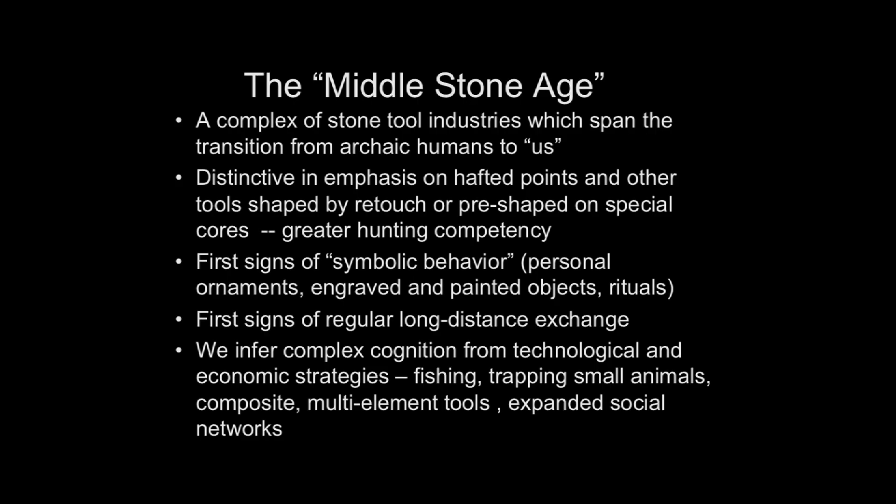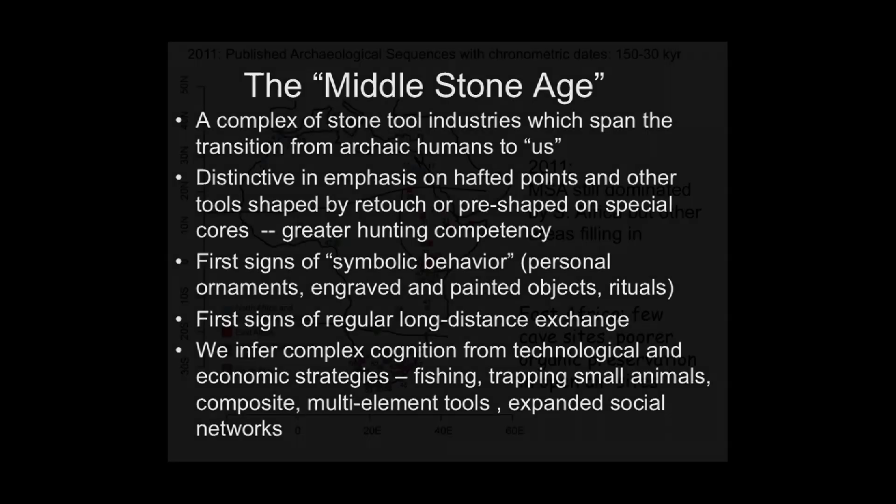This goes along with greater hunting competency. We also see in the Middle Stone Age — not necessarily from the very beginning, but certainly as it continues — the first signs of symbolic behavior, including personal ornaments, engraved and painted objects, and rituals; the first signs of regular long-distance exchange. We also infer a dramatic increase in the complexity of human cognition from the technological and economic strategies developing within the Middle Stone Age: fishing, trapping small animals, making composite multi-element tools, and expanded social networks.